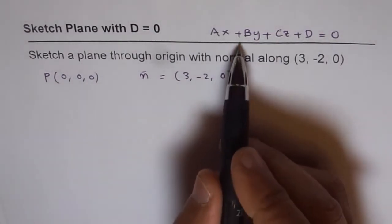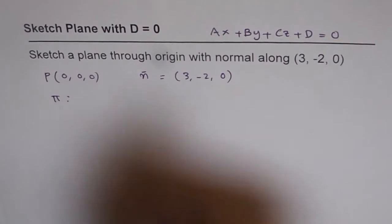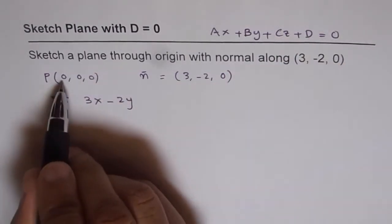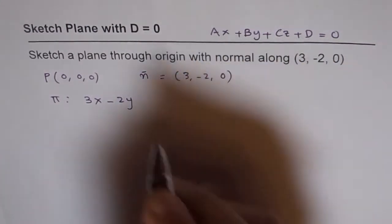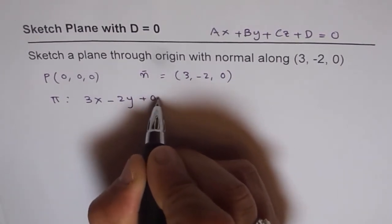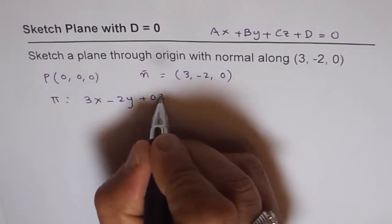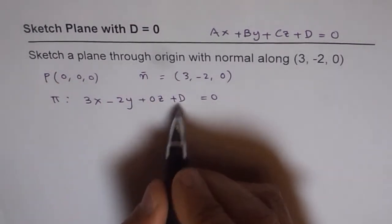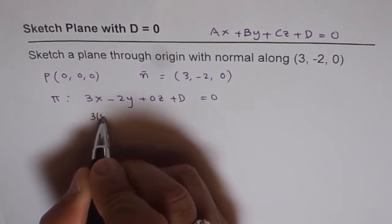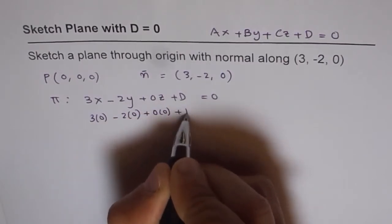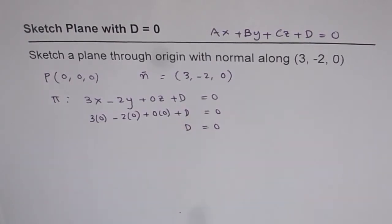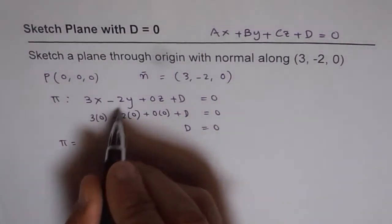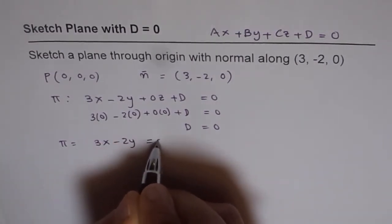Now if the normal is (3, -2, 0), we can find the equation of the plane. The equation of the plane pi could be written as 3x minus 2y plus 0z plus d equals 0. Since the origin (0, 0, 0) is on the plane, substituting gives 3 times 0 minus 2 times 0 plus 0 times 0 plus d equals 0, which gives us d equals 0. So the equation of the plane pi is 3x minus 2y equals 0.